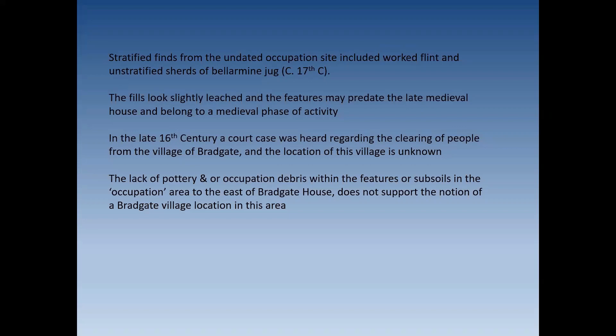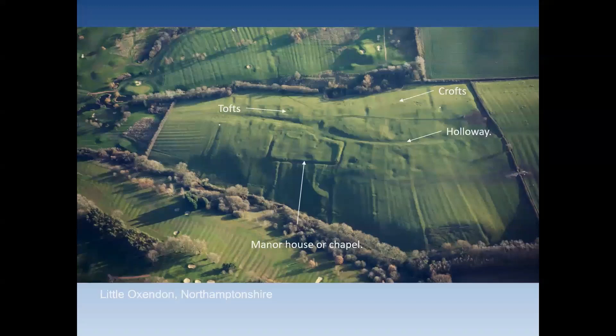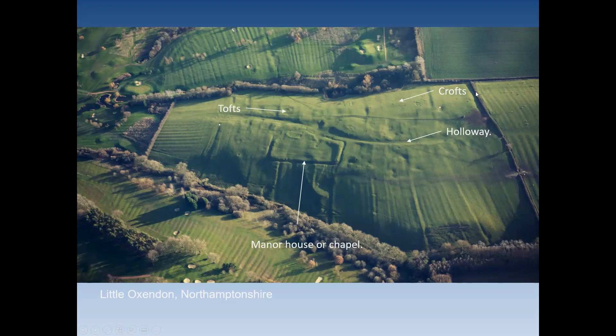The medieval village area may remain below the now-flooded valley that is Cropston Reservoir. References to Bradgate closes in that area support this. A deserted medieval village such as Little Oxenden in Northamptonshire illustrates the typical pattern — house platforms, small enclosures with animal pens, and the surrounding open fields of ridge and furrow.